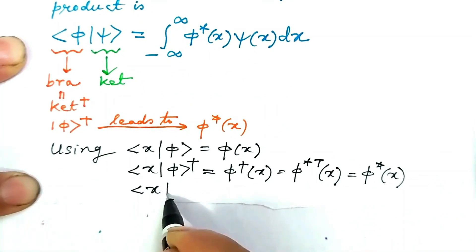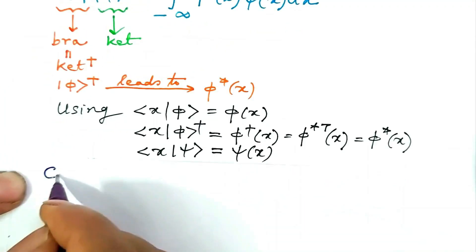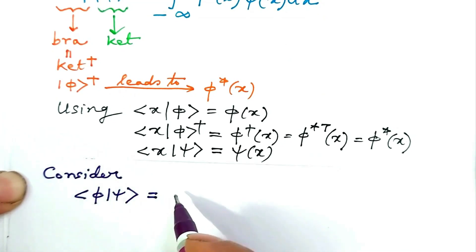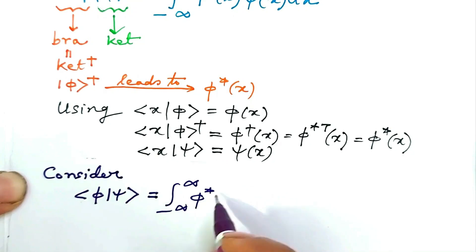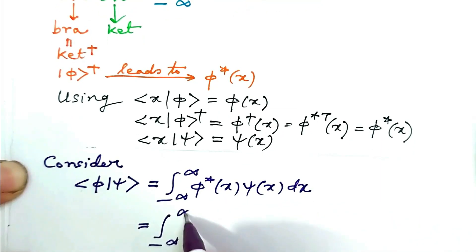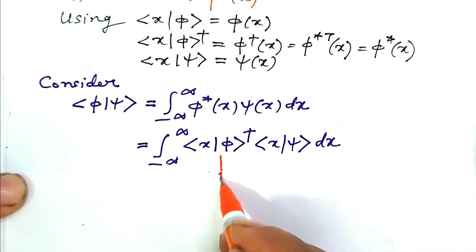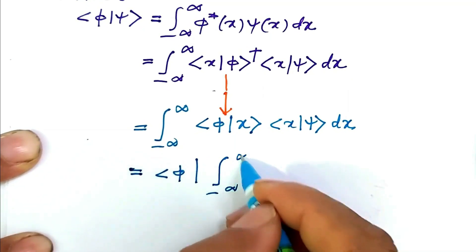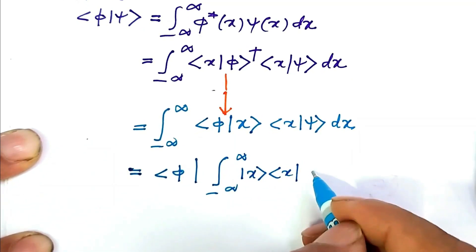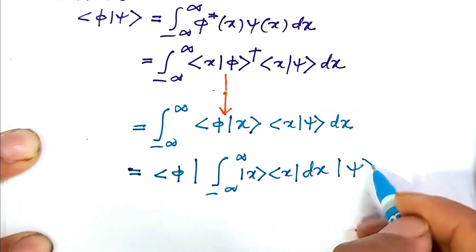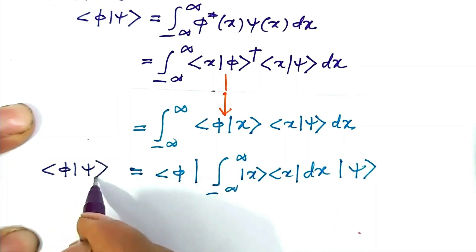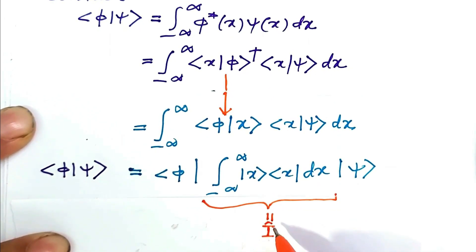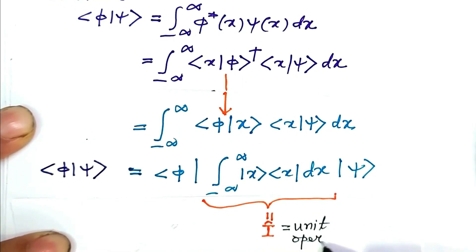Also, bra x ket ψ gives ψ(x). Consider the inner product bra φ ket ψ = ∫φ*(x)·ψ(x) dx. Taking bra φ on the left and ket ψ on the right and collecting the x factors in between, we get an expression whose left-hand side is bra φ ket ψ. Comparing both sides, we see that this quantity involving integration over x has to be a unit operator. So these relations, collected together, define the completeness relation.